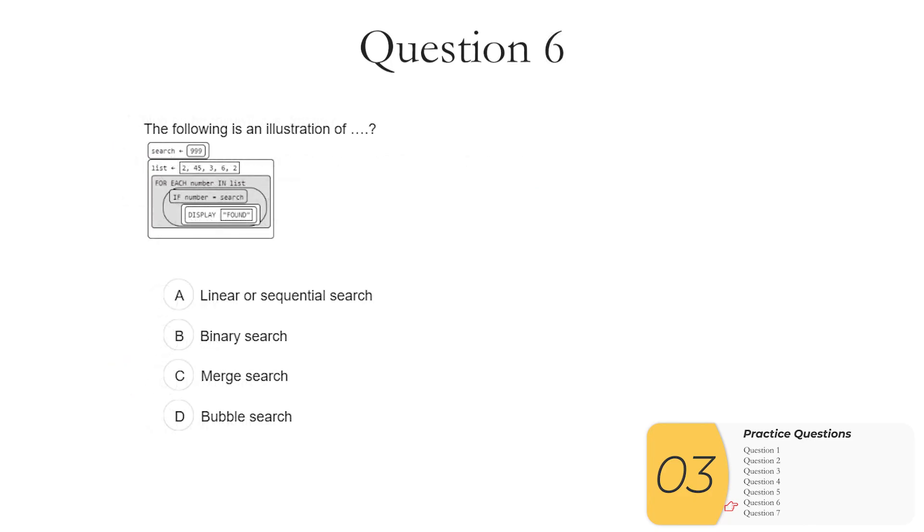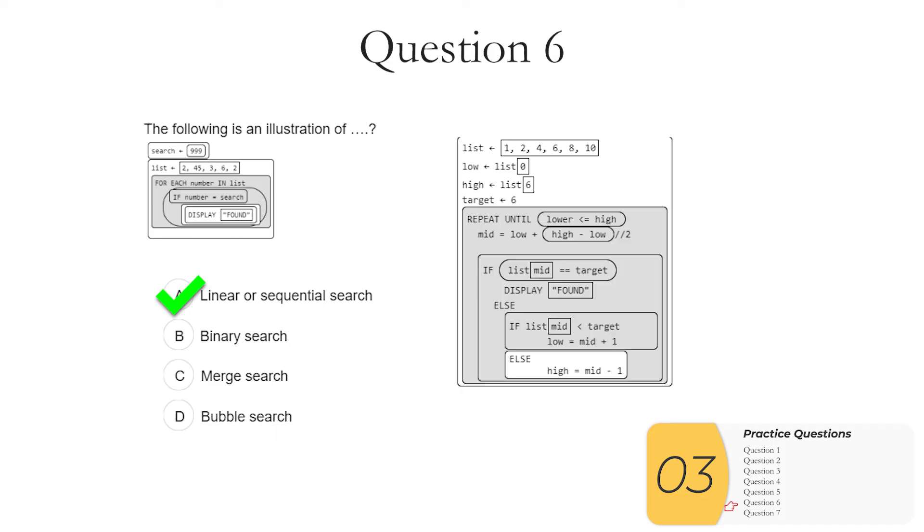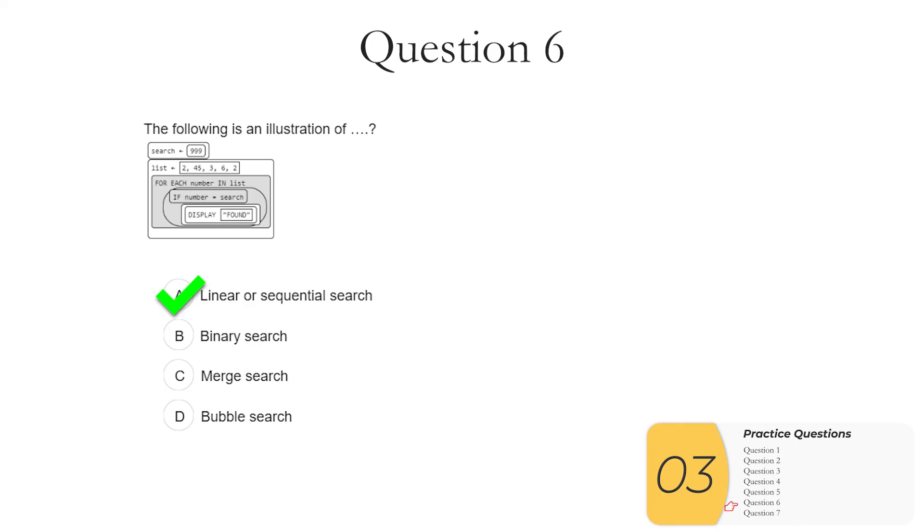Question six. The following is an illustration of blank. So this is really a test of the notation that you'll see on the AP exam. You loop over each item in the list and you check to see if the number that you're on is equal to what you're looking for. This is pretty much the definition of a linear search. So the answer is A. A binary search you'd have to have two numbers, take the average which finds the middle of the two, and have all these different scenarios depending on if you're higher or lower than the number you're looking for. It's going to look something like this on the right. It's much more complicated. Anyway, this is not a binary search. Merge search and bubble search don't exist. They are merge sort and bubble sort. So again, the answer is A, linear or sequential search.